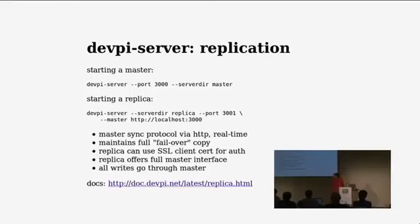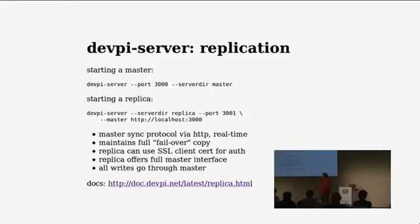One feature that came out last week is replication, because a funding company who gave some money for open source development wanted the ability to run DevPI server in replication mode. The first command starts the server on port 3000, and then you start a replica somewhere else, specifying a separate directory for server state, and indicating that the master is the first instance. The second invocation starts a replication instance.